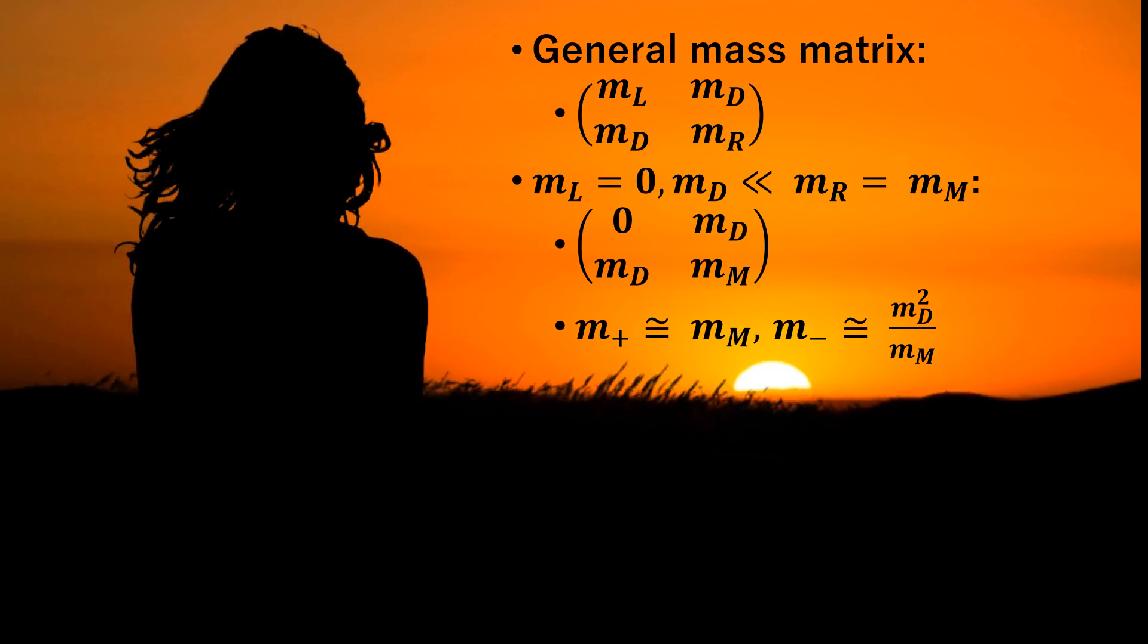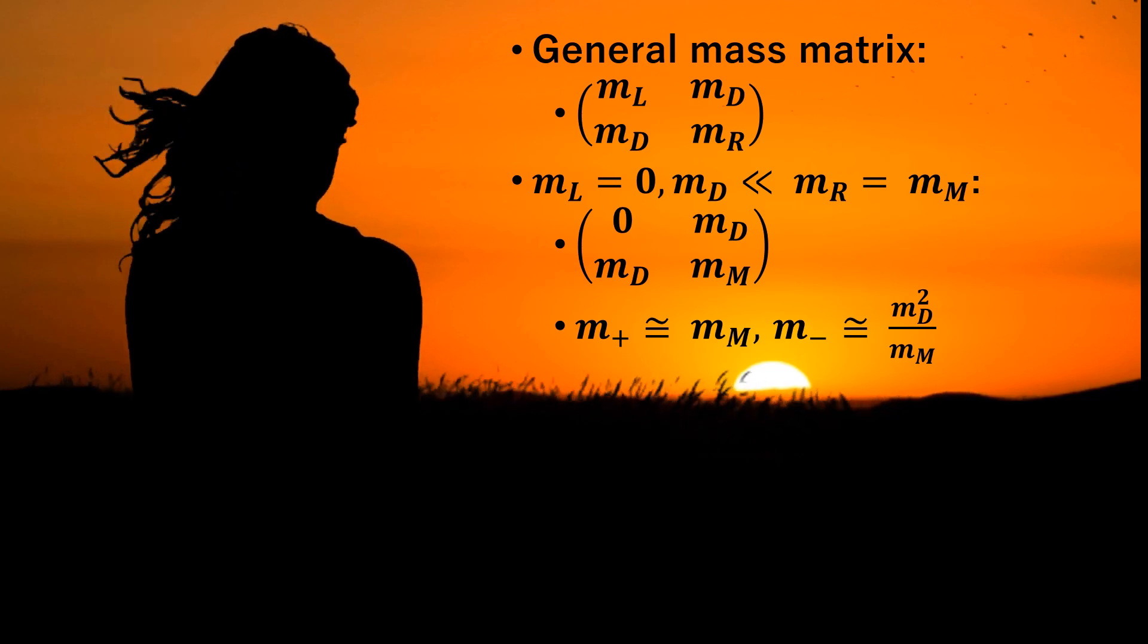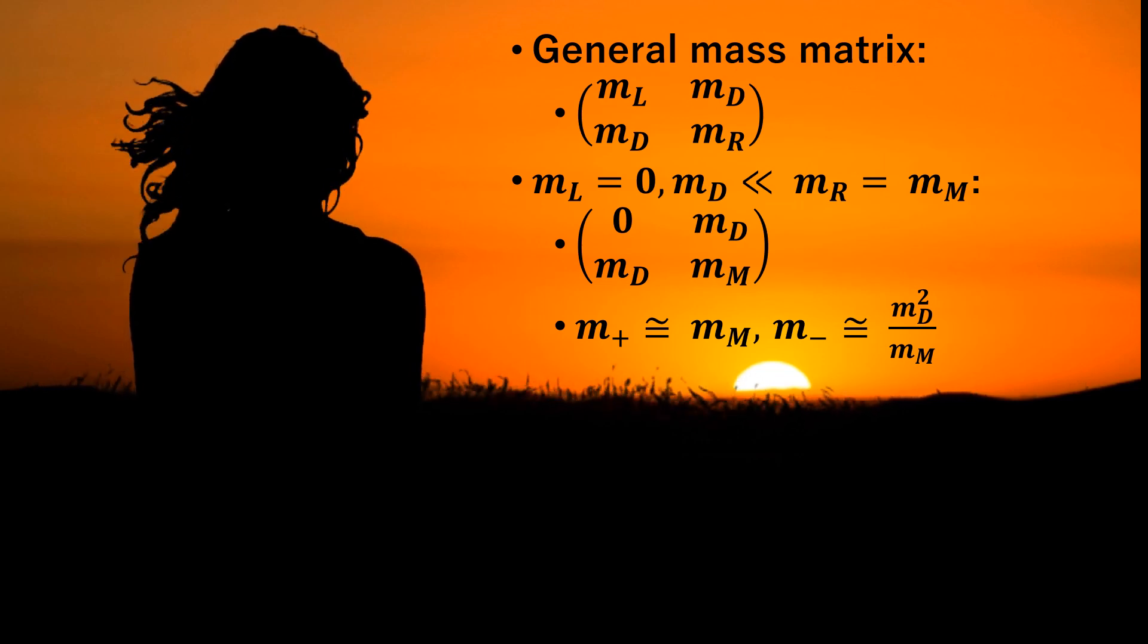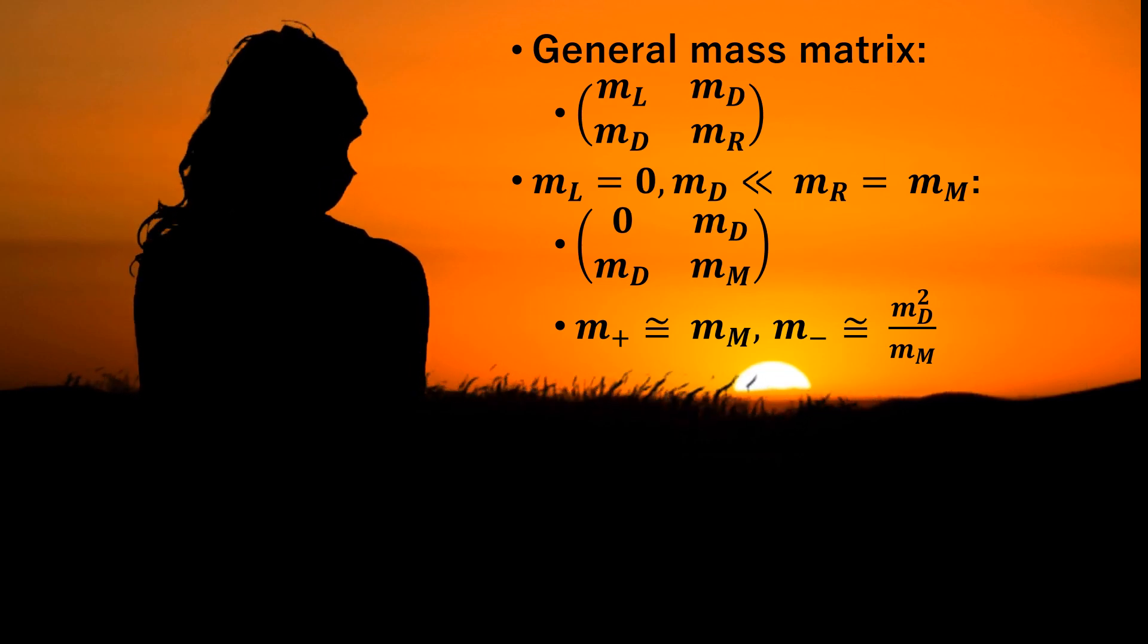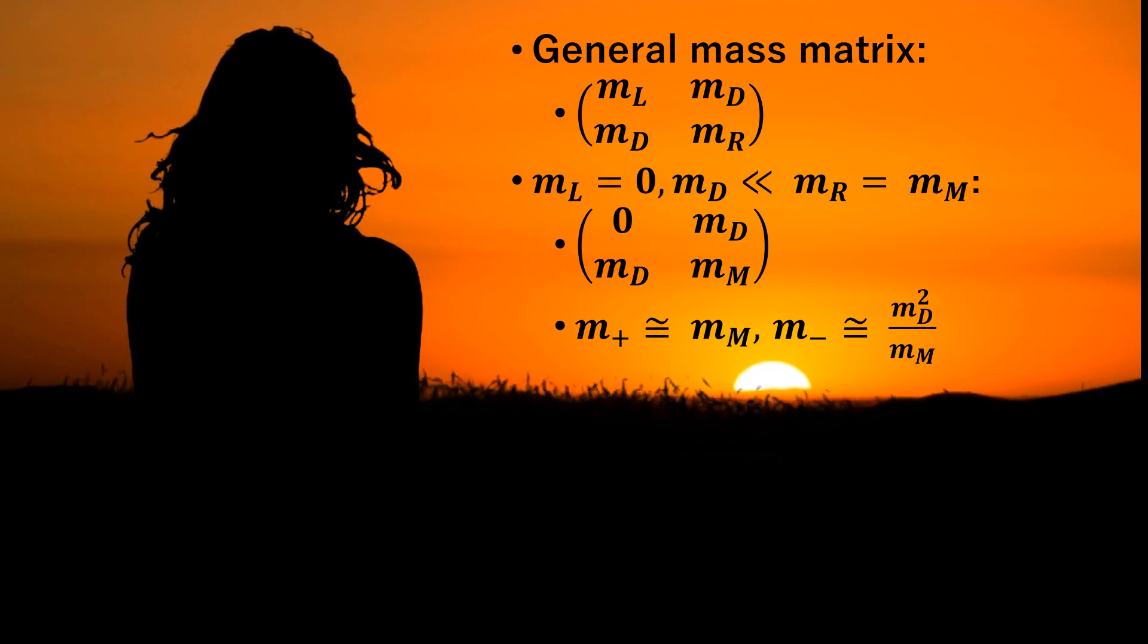The smaller eigenvalue then leads to a very small neutrino mass, which is qualitatively consistent with experiments and is sometimes regarded as evidence to support the framework of Grand Unified Theory.